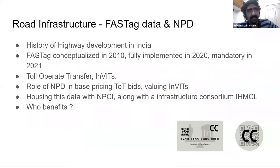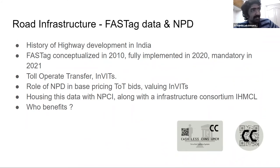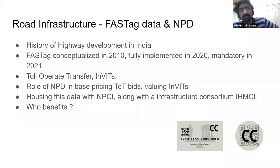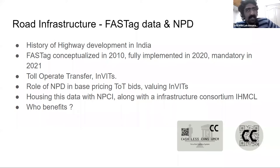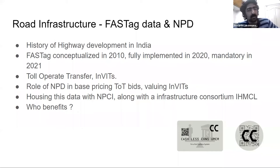Similarly, for road infrastructure and FASTag: there's a brief history of highway development in India through multiple PPP modes since the Golden Quadrilateral era, but that sector also faced significant financial health issues — contractors not getting compensated, tools not collected properly. FASTag was conceptualized as an electronic tolling system to maximize revenues, much like BBPS solved a collection problem in the power sector. It was conceptualized in 2010, went through multiple iterations, fully went live in 2020, and is now managed from 2021.